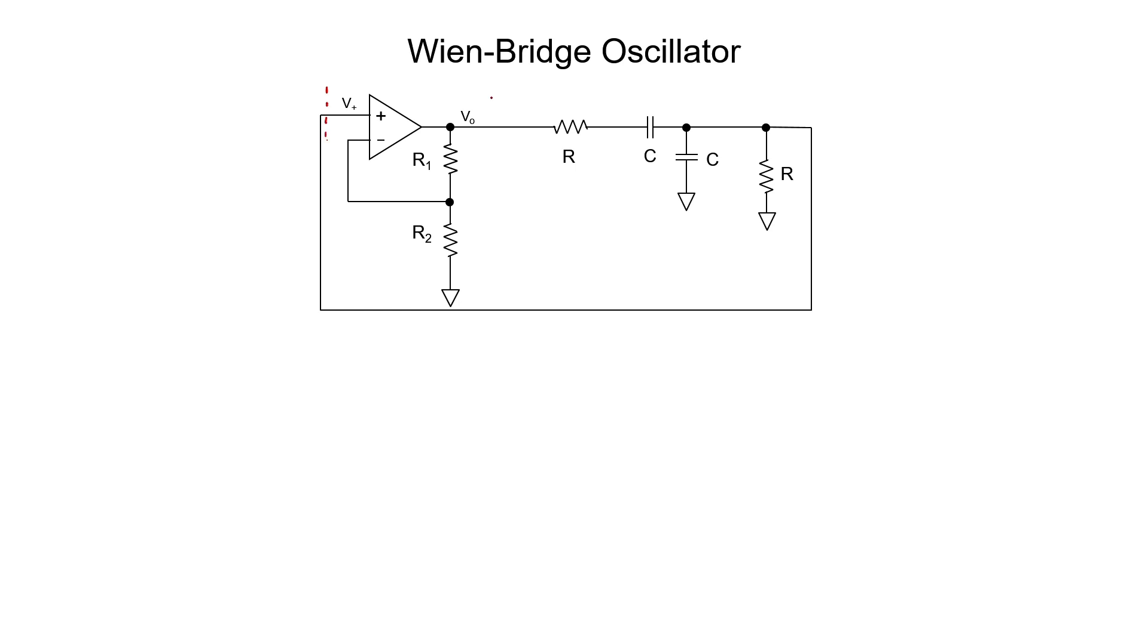You might recognize the amplifier in this circuit as a simple non-inverting configuration of an op amp. We can see that this filter is a bandpass filter because it has two capacitors, one in series and one in shunt.